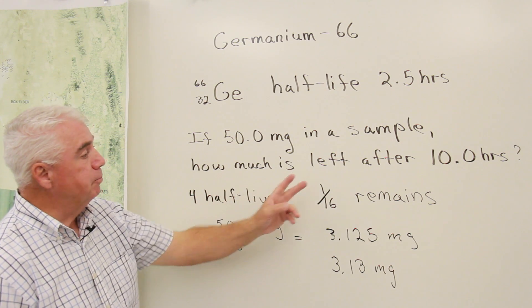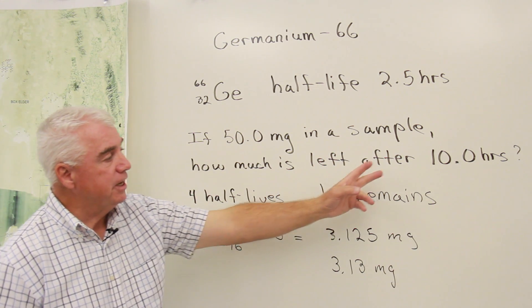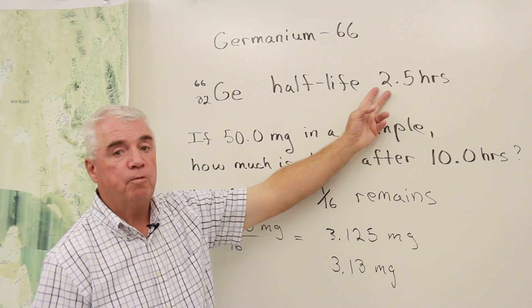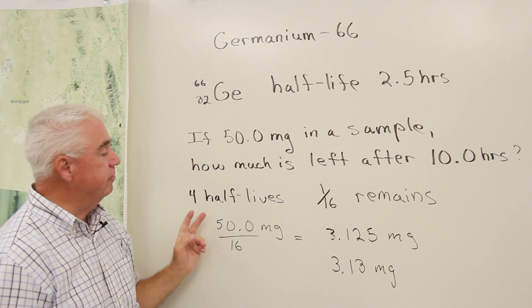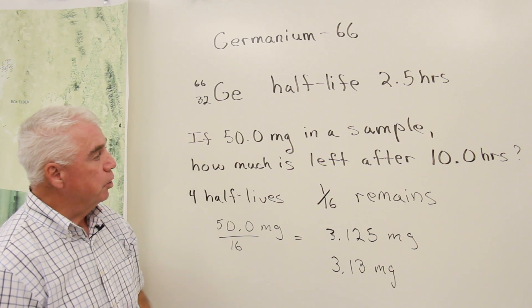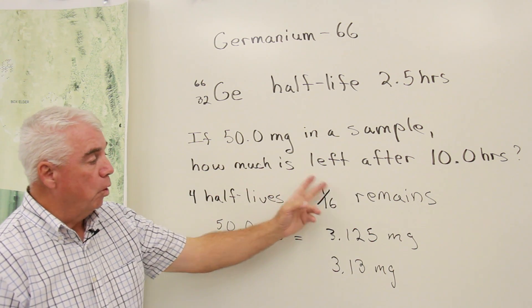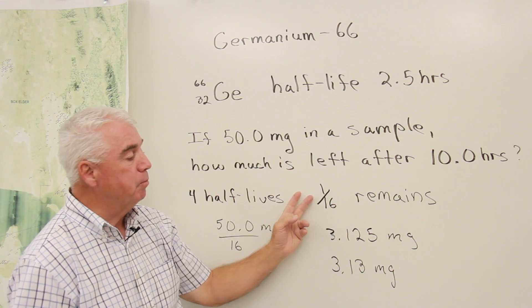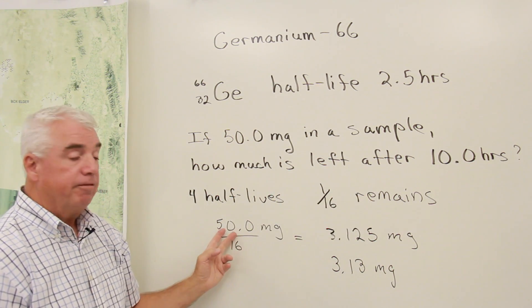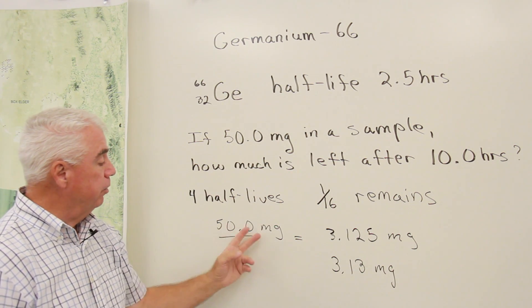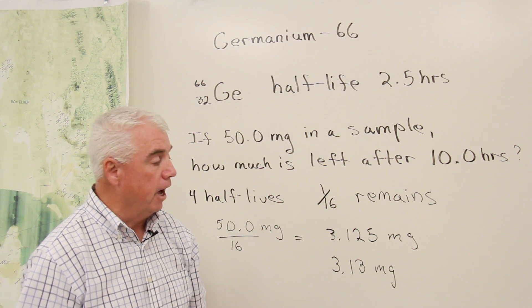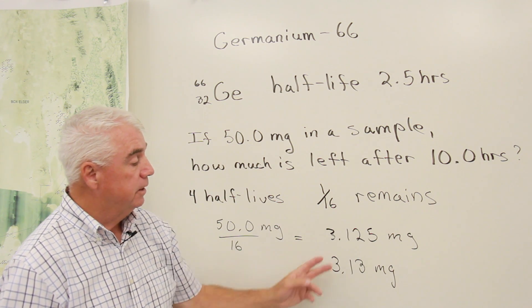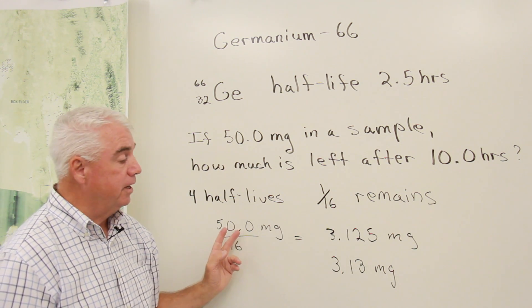Using the concept of half-life, I see that 10 hours is four half-lives. Four times 2.5 would give us 10 hours. So four half-lives have occurred. Only one-sixteenth of the sample would remain. If I divide that 50 milligrams by 16, we find that 3.125 milligrams are left. Rounding off to three significant figures, we get 3.13 milligrams.